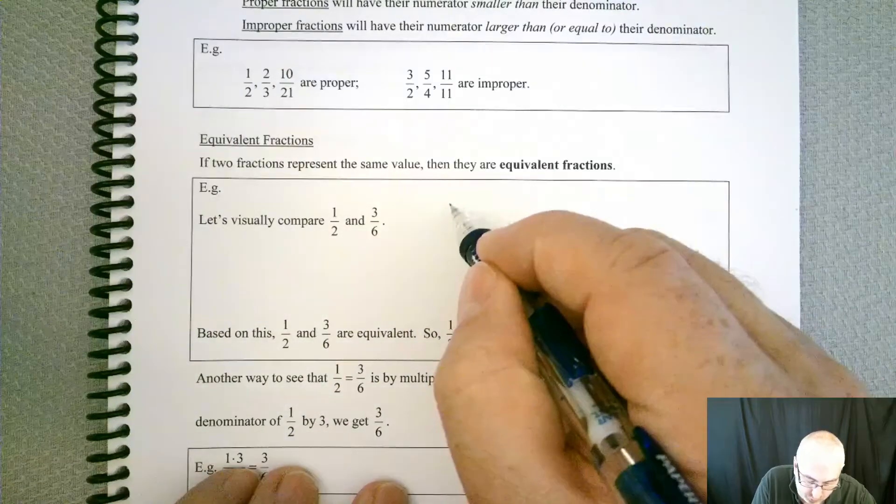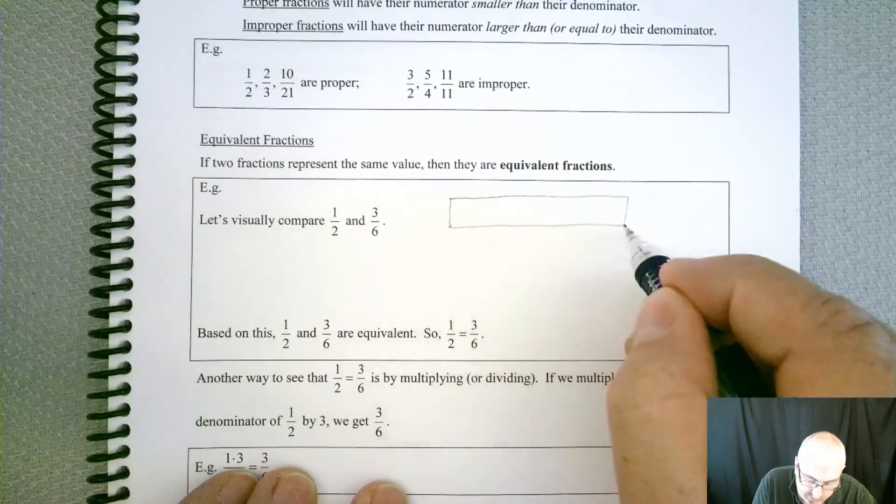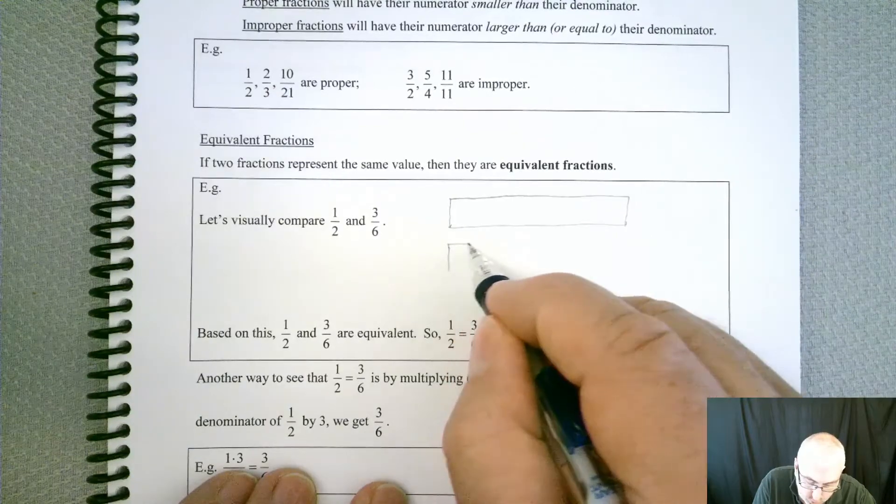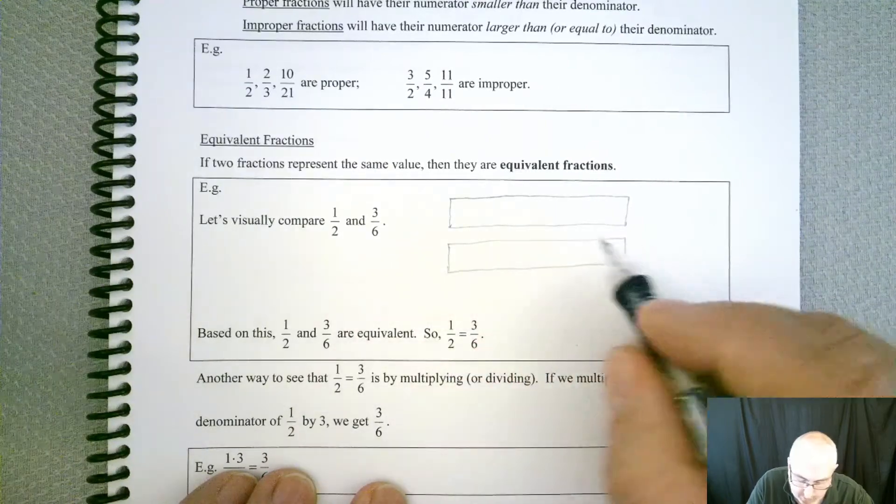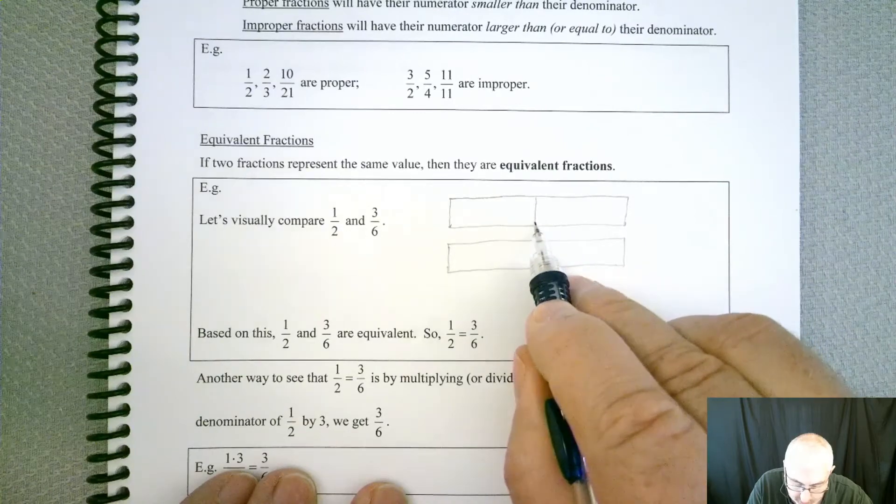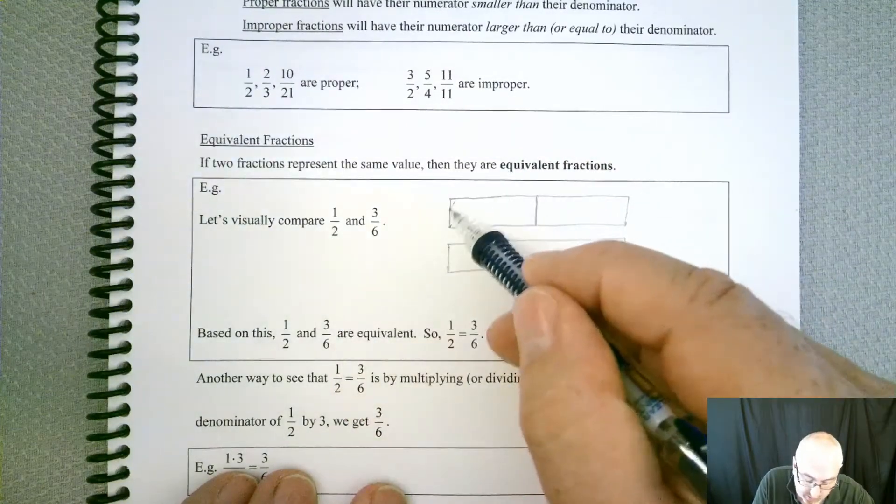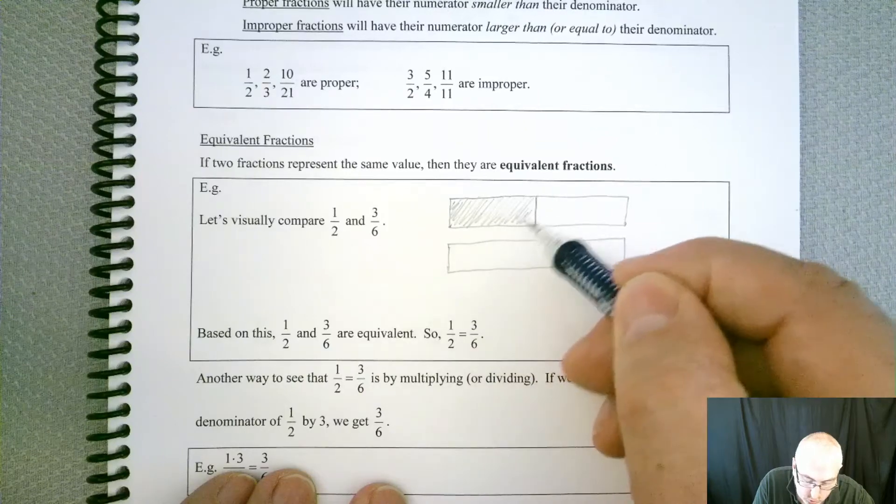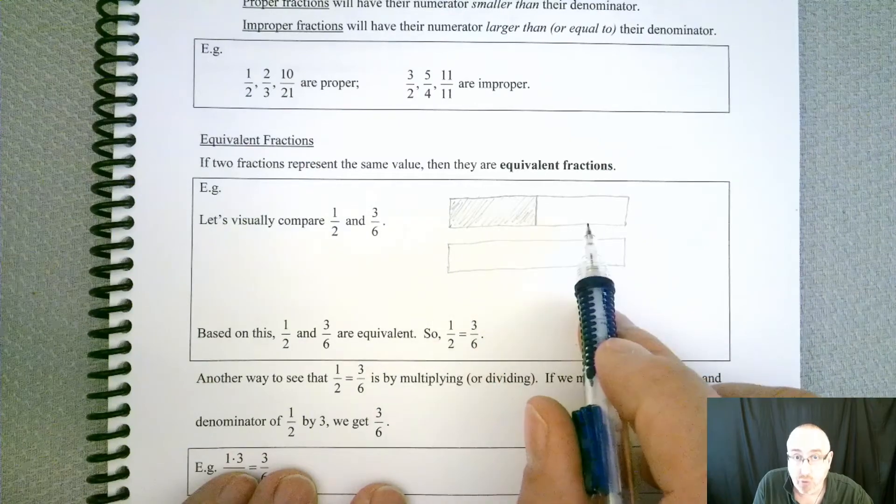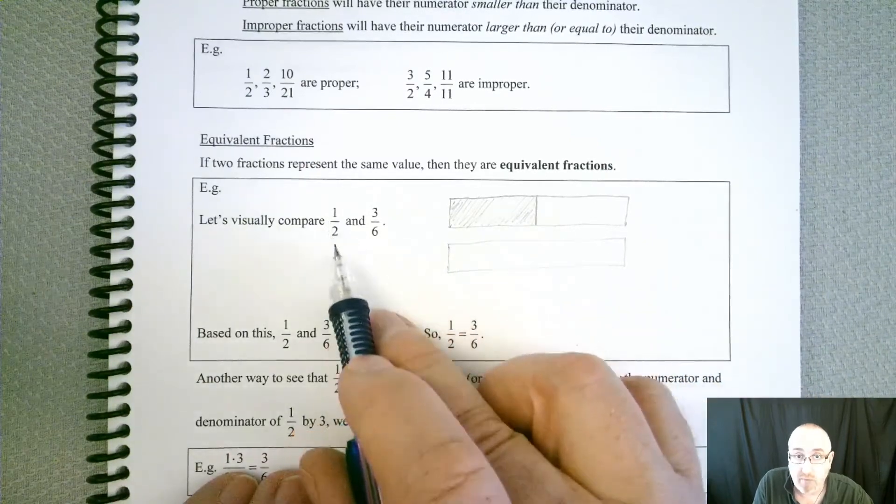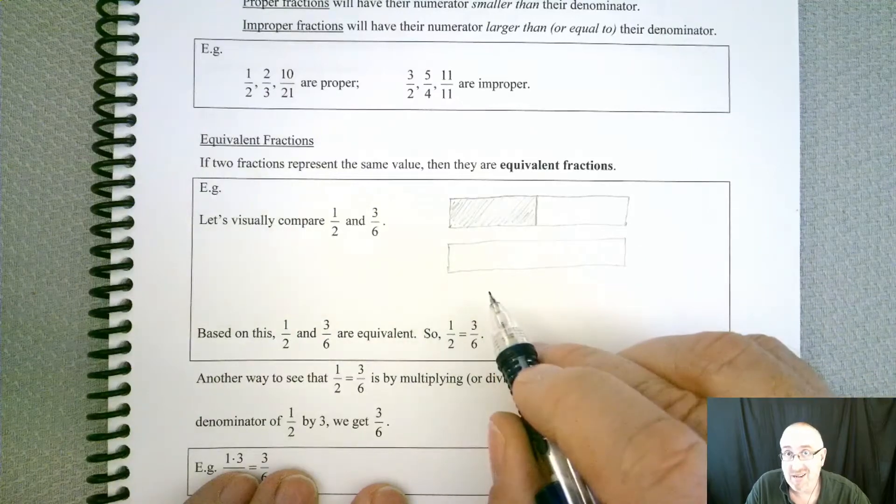The way I'm going to do that is I'm going to draw two boxes, one on top of the other one, and I'm going to try to make them exactly the same. Now the first box, I'm going to go right to the middle and cut it in half, and then I'm going to shade one side.